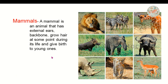The next term is mammal. A mammal is an animal that has external ears, a backbone, grows hair at some point during its life, and gives birth to young ones. These all are examples of mammals.